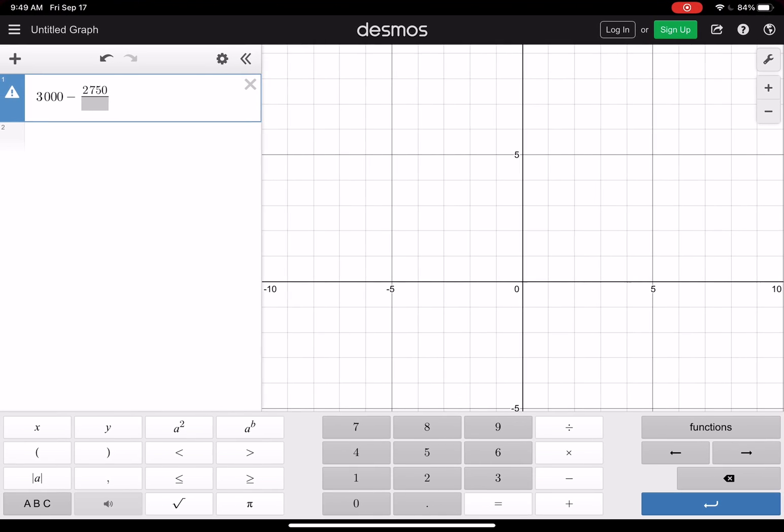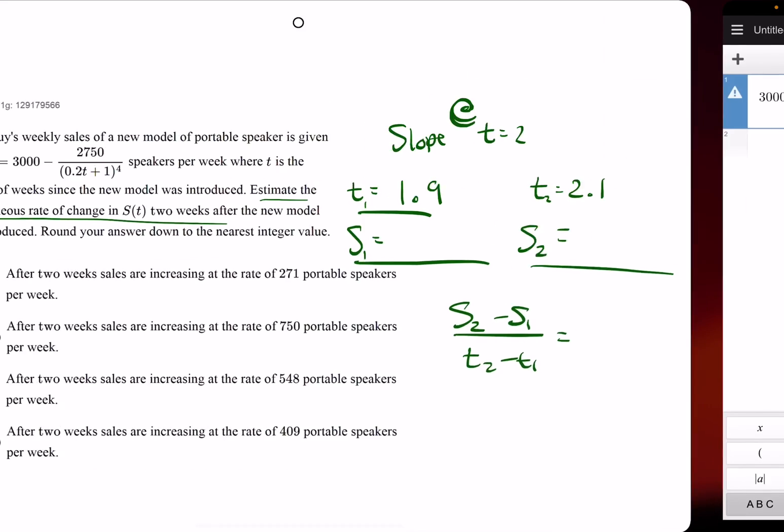0.2 times 1.9 plus 1. 0.2 times 1.9 plus 1, close parentheses. We raise it to the fourth power.